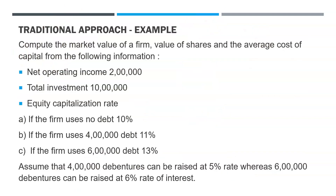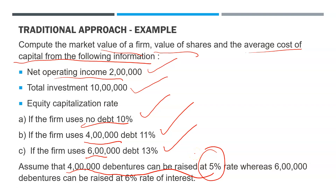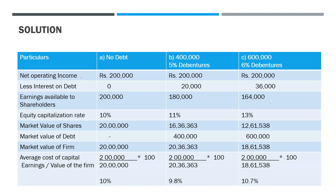Now coming straight to the examples to make this clearer. We need to find the value of the firm, value of equity shares, and weighted average cost of capital for a company. The net operating income is constant at every level as per the assumption. Given information includes total investment, cost of equity at 10% with no debt, 11% up to 4 lakh debt, and 13% up to 6 lakh debt. The formula used is the same as previously discussed.